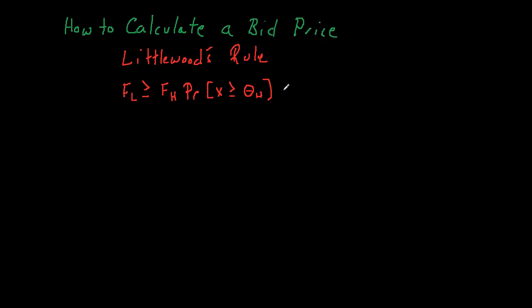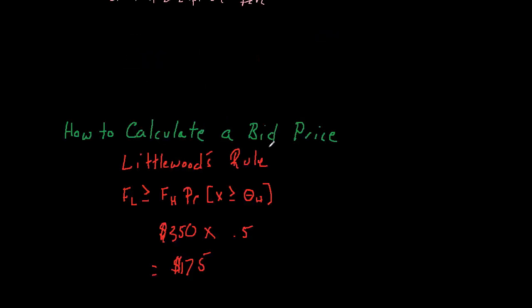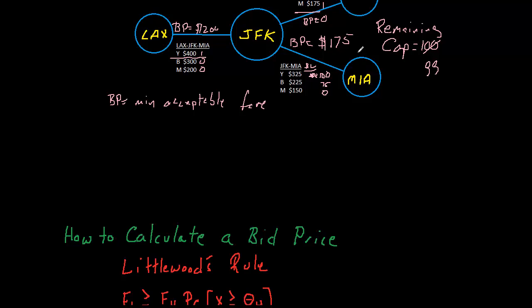In this case, let's make our example work. Let's say the high fare was $350, and the probability that we would sell the next seat at a high fare was 0.5. Then the expected value would be $175, and that would be used as the bid price.